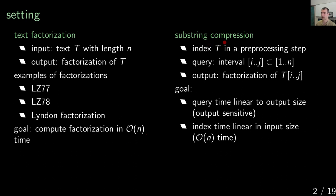In the substring compression model, we are given the text and we can pre-process it in a preprocessing step. We build an index on it, and then at query time, given an interval, we want to compute the factorization of that specific substring. The query time should be linear in the output size — so it should be output sensitive — and for the indexing part we restrict to linear time optimally.